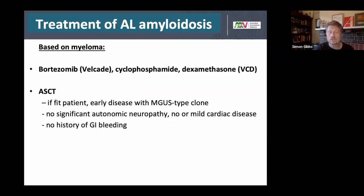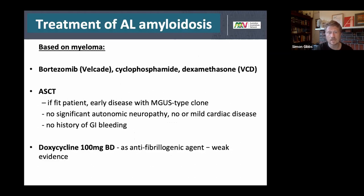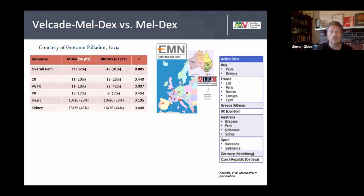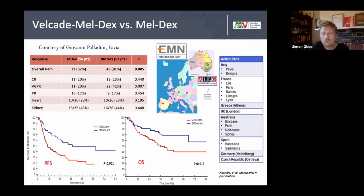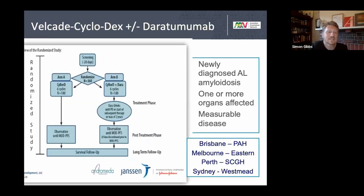The standard treatment for AL is bortezomib — a subcutaneous weekly proteasome inhibitor — combined with cyclophosphamide and a steroid, plus autologous stem cell transplantation in those fit enough, with doxycycline as an antifibrillogenic agent. Velcade/bortezomib has been demonstrated in studies, including in Australia, to improve overall survival.